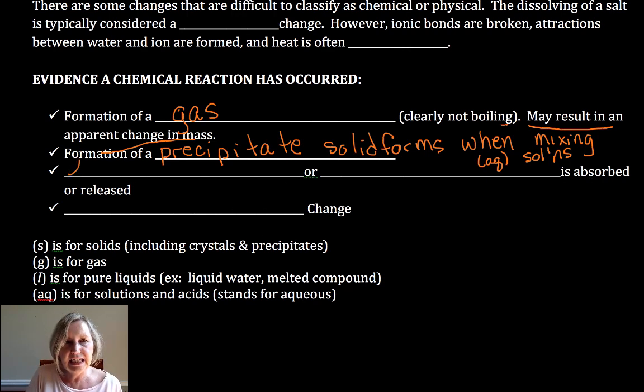All right. The next one is heat or energy in some form. The fire from a Bunsen burner or sometimes a light is emitted. So that's evidence of energy is absorbed or released. And that's evidence of a chemical change.